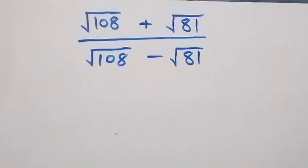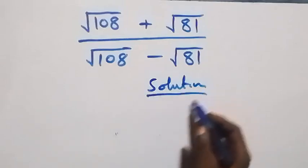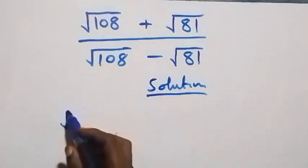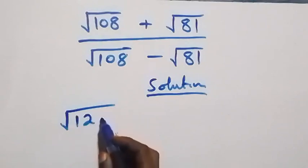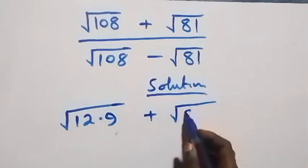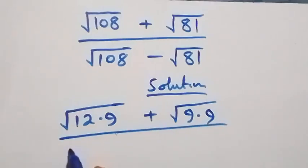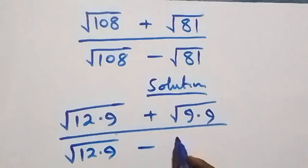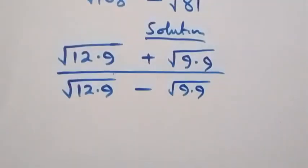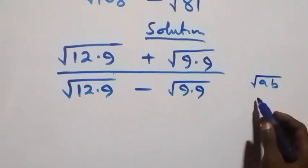Hello, you are welcome. How to solve this nice square root problem. From what we have here, we can rewrite this as square root of 12 times 9, plus square root of 9 times 9, then divided by square root of 12 times 9, minus square root of 9 times 9.